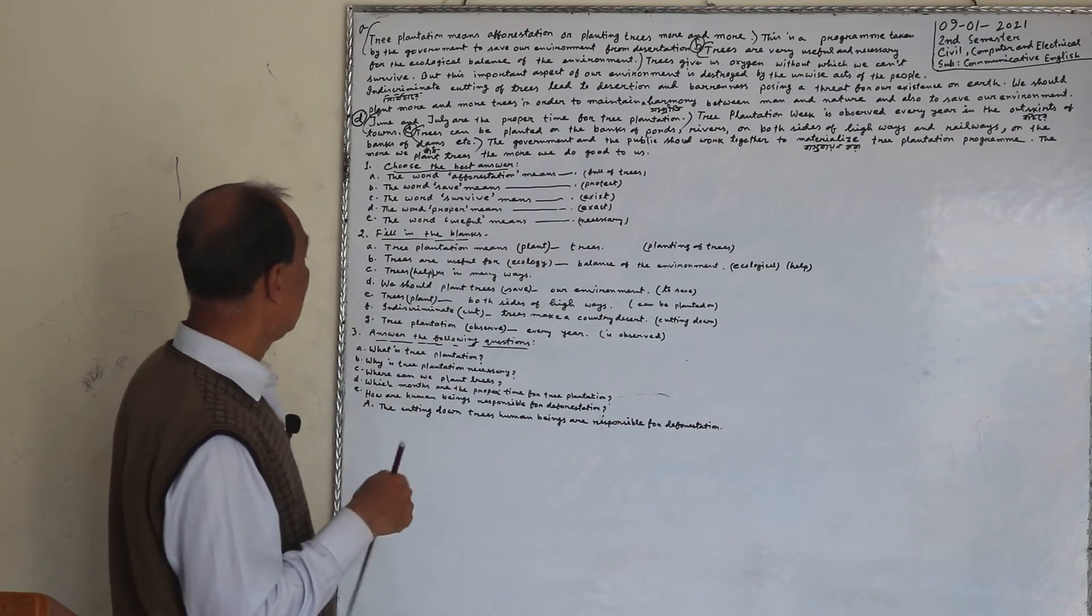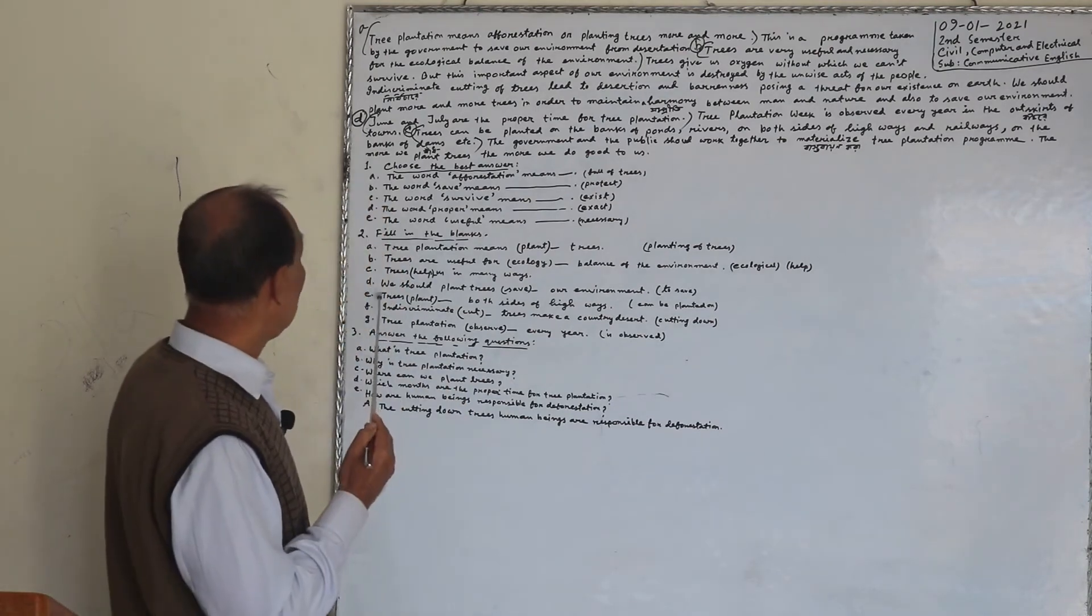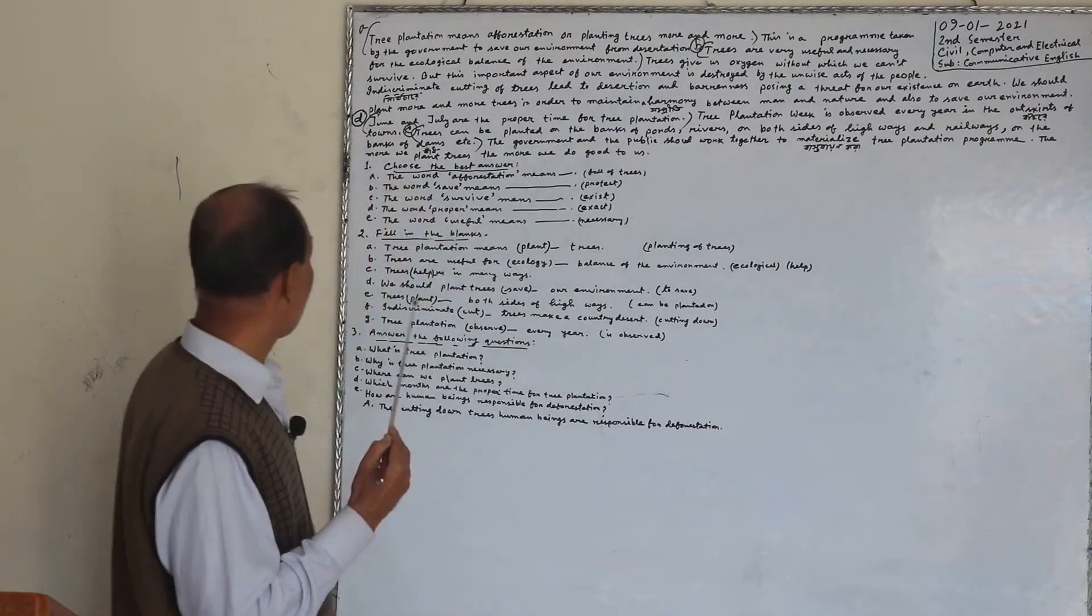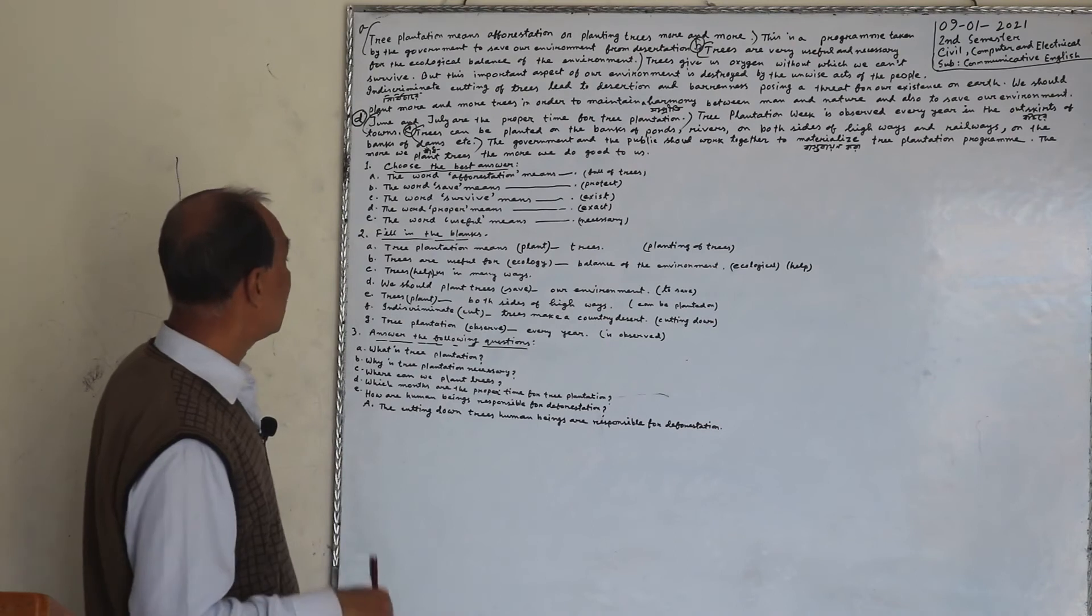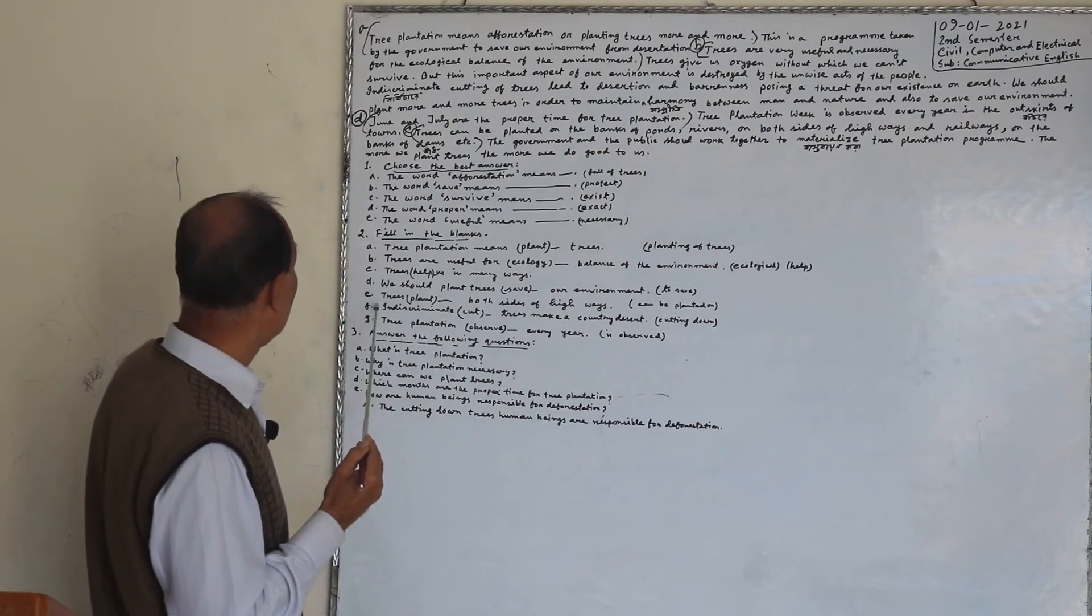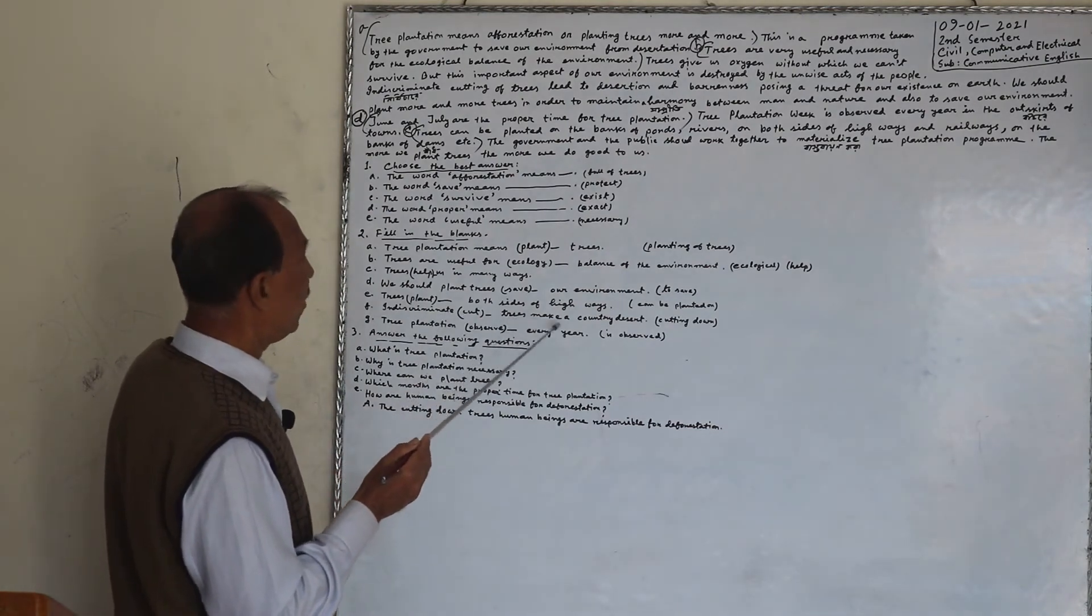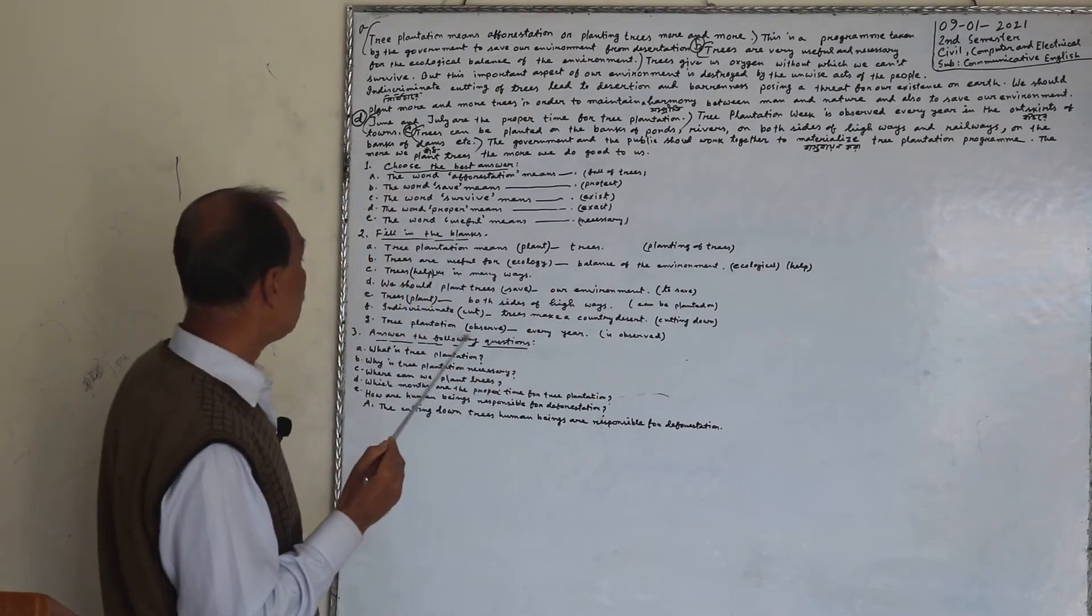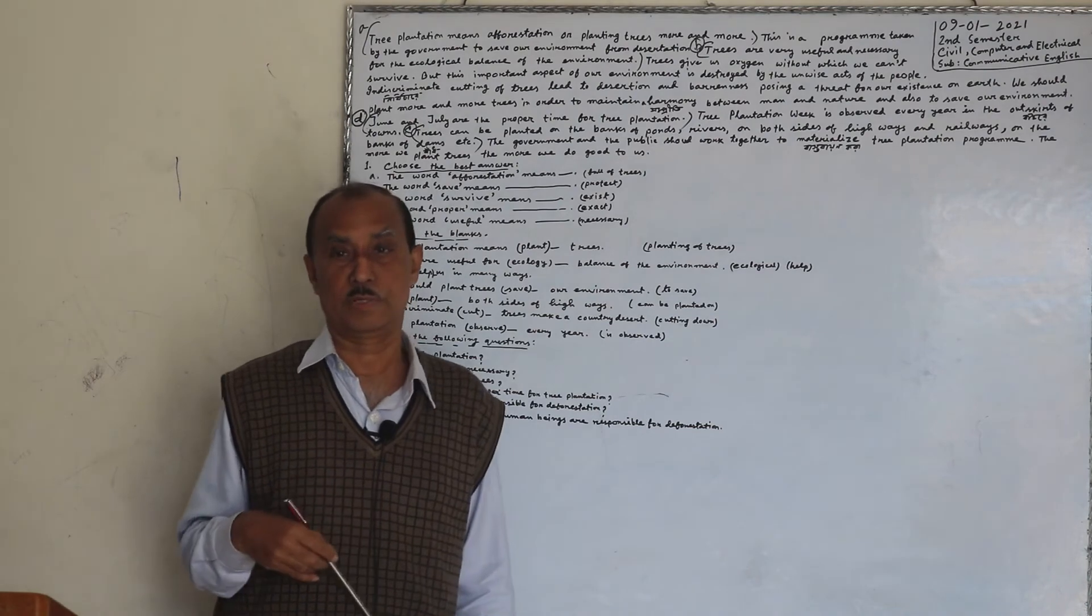Trees help us in many ways. We should plant trees, save our environment. Trees plant, dash, both sites on highways. Trees can be planted. Indiscriminate cut trees make a country desert. Cutting down. Trees plantation observed every year. Is observed. Prithi vasa, gaspala.